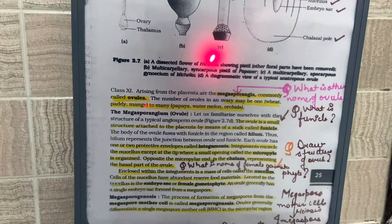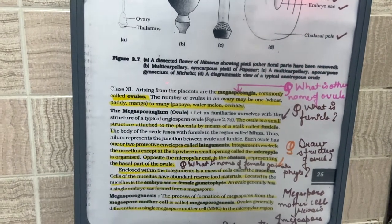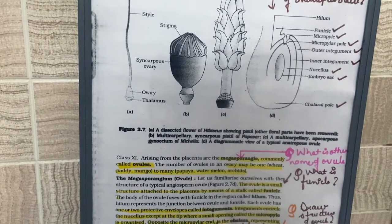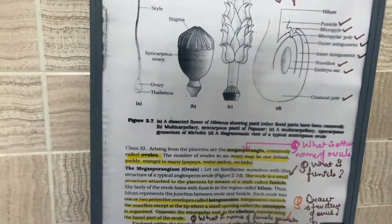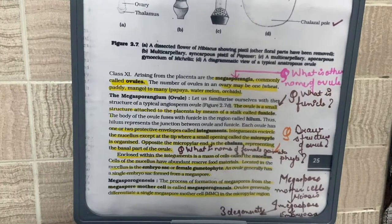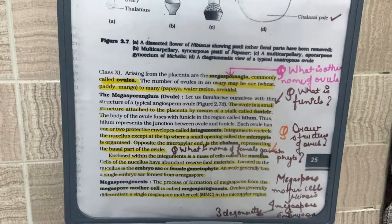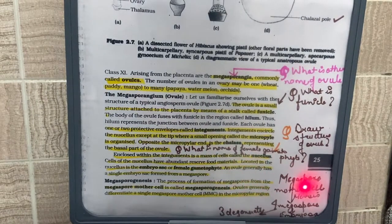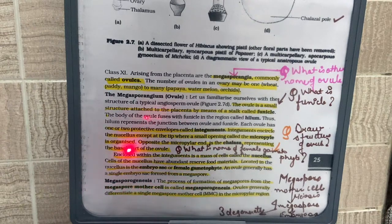At the micropylar end of the ovule there is one megaspore mother cell. In this megaspore mother cell, meiosis takes place, and during meiosis four megaspores are formed.